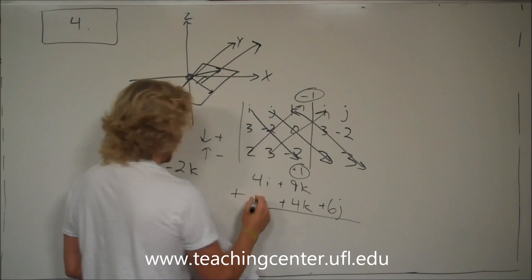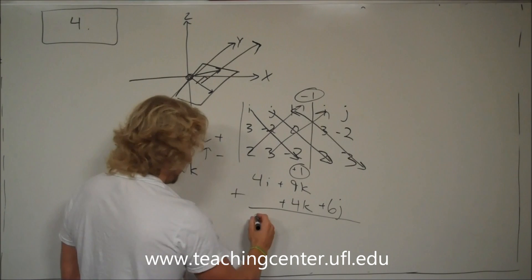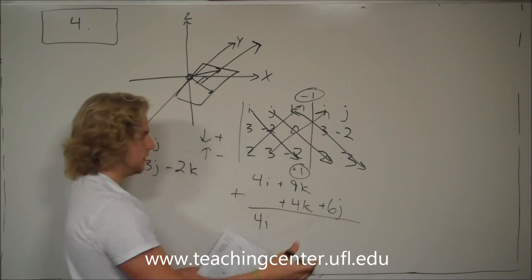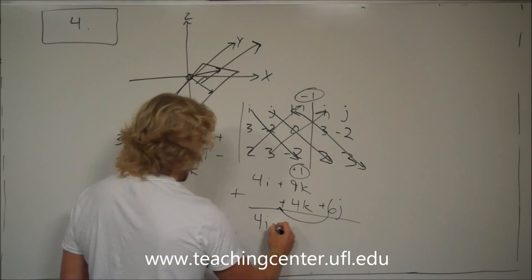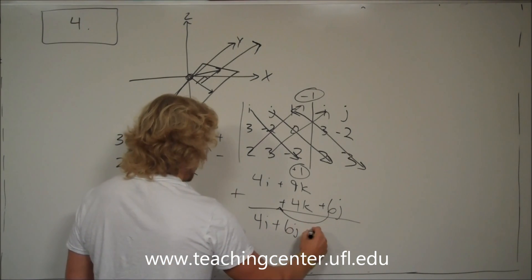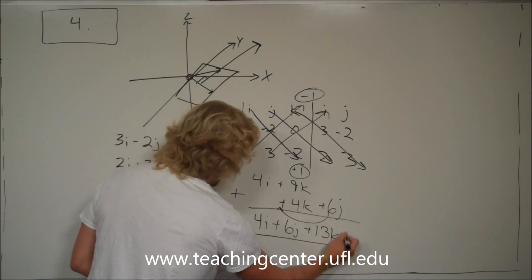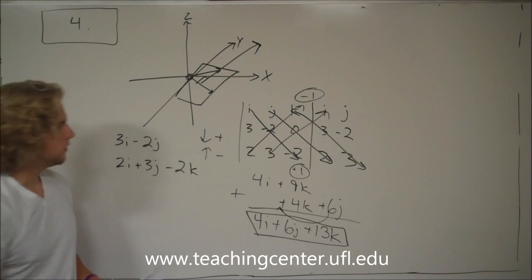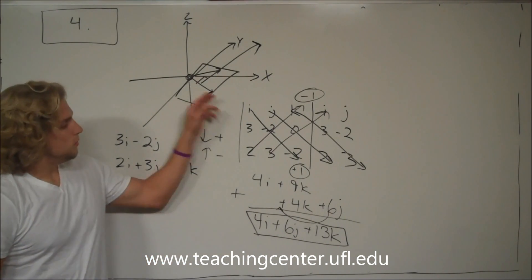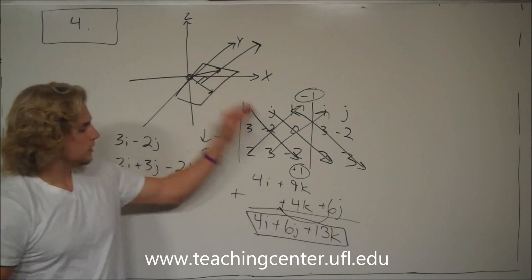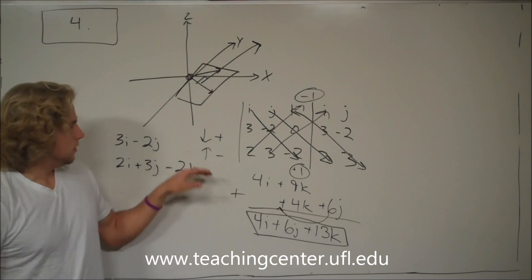Then you add this all together. The final answer is 4i plus 6j plus 13k, and that is your final answer. That's an easy way to do cross product. You just have to remember that if you are going down it's positive, if you are going up it's negative, and then you add them all together.